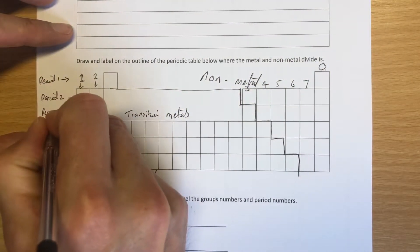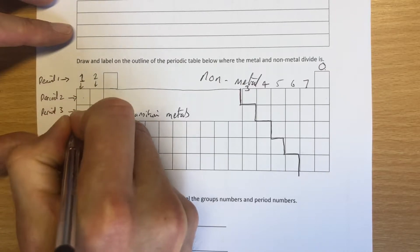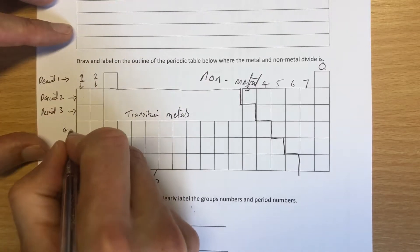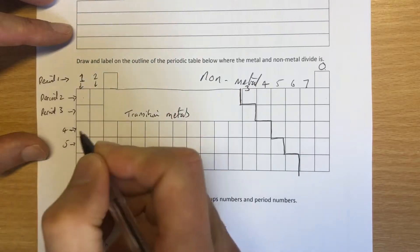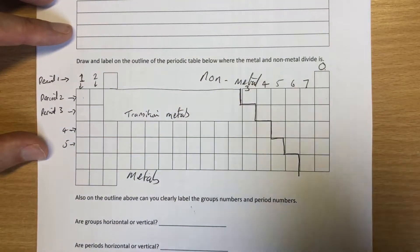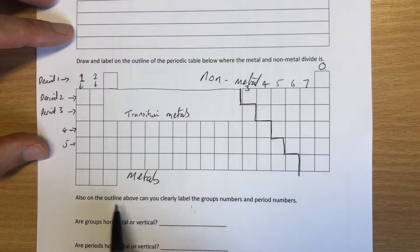Period three that way. Period four, five, six, etc. So groups go down, periods go across. That's what we have to remember.